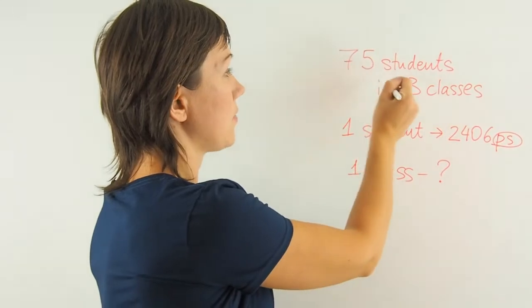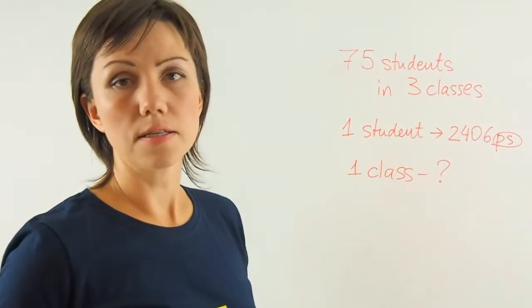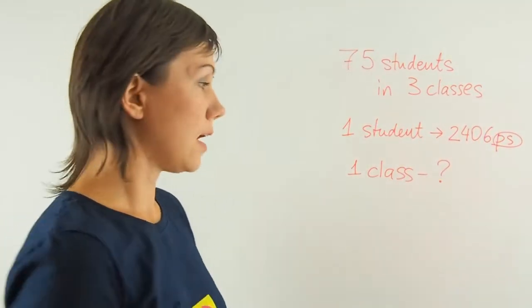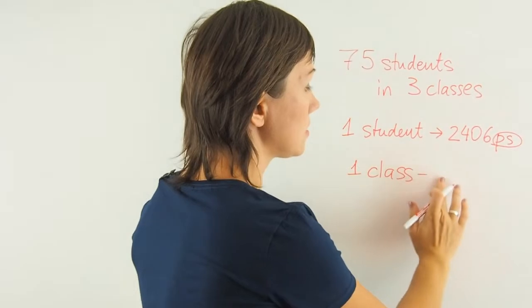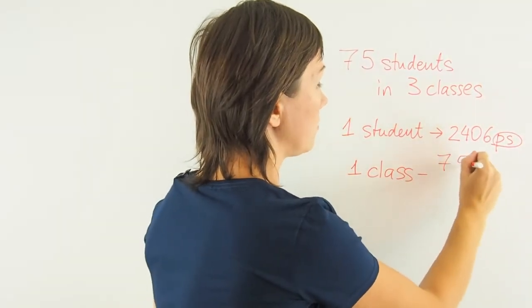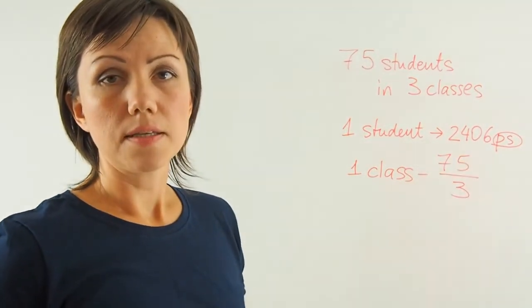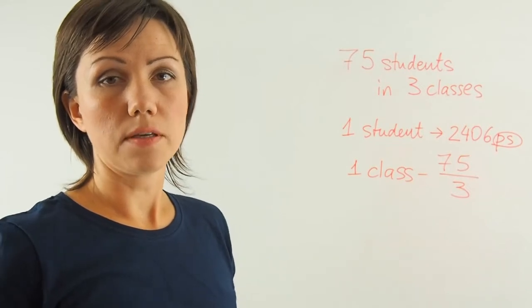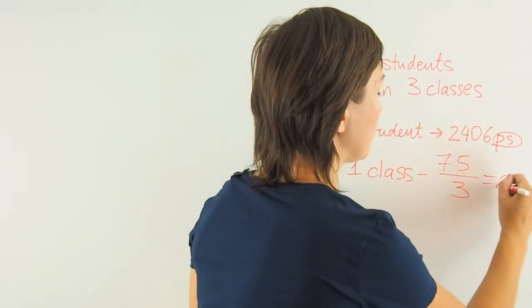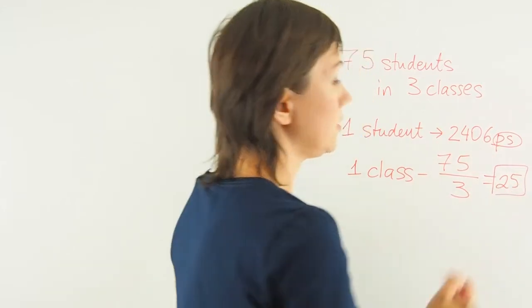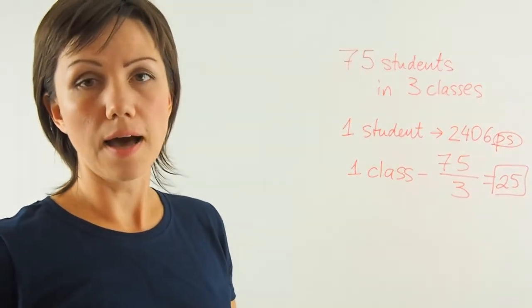So I know that there are 75 students in three classes, 75 over three. 75 over three is 25 students. There are 25 students in one class.